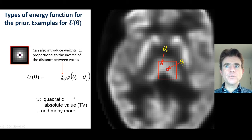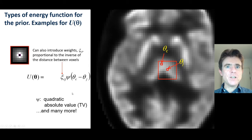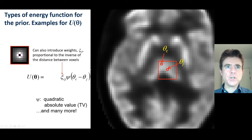We can also build in a distance measure. For example, the further pixel c is from pixel j, we can use a smaller weighting factor for that potential.